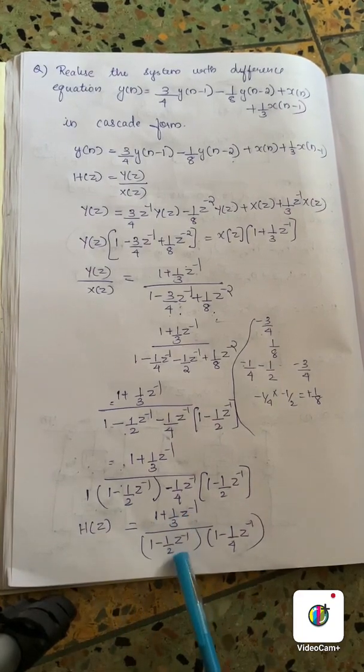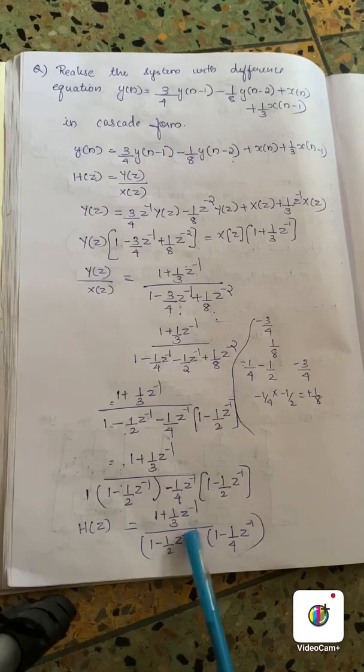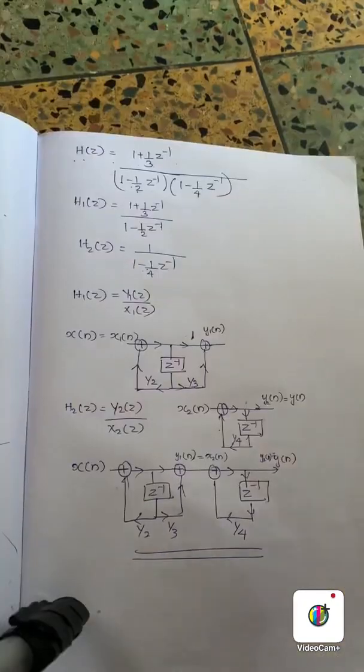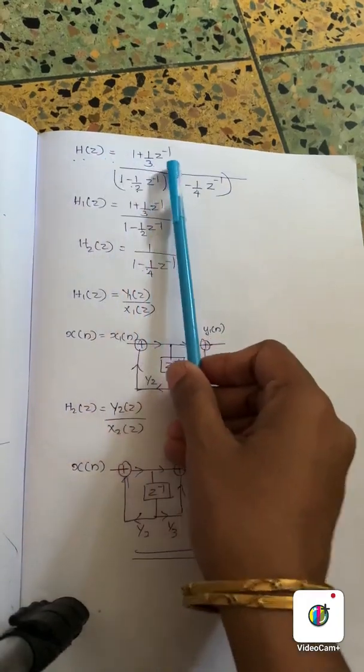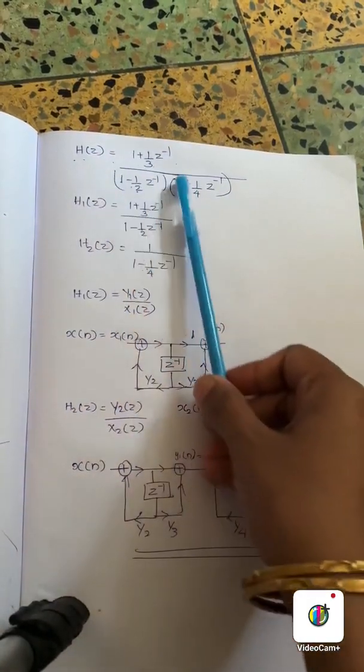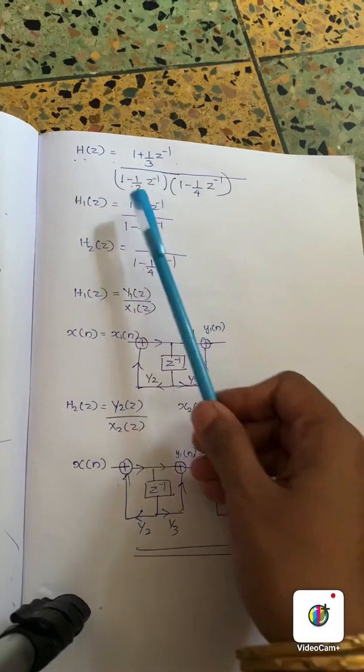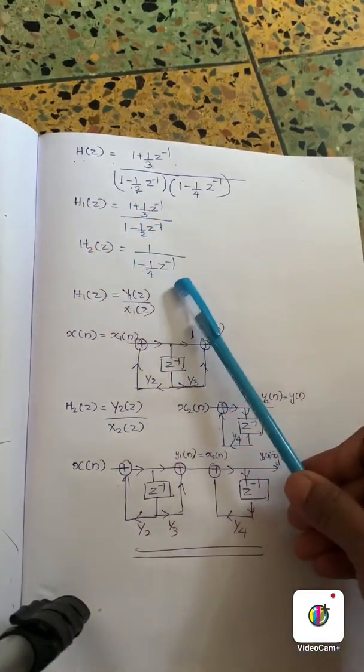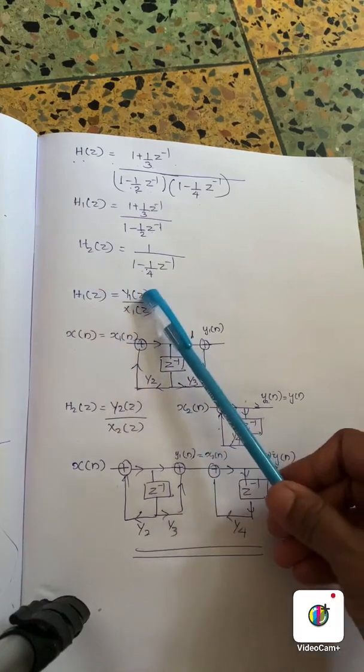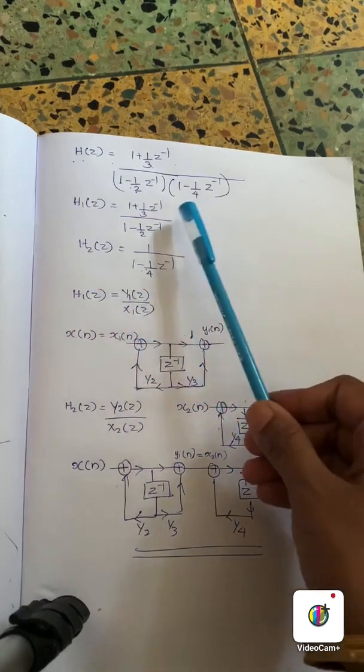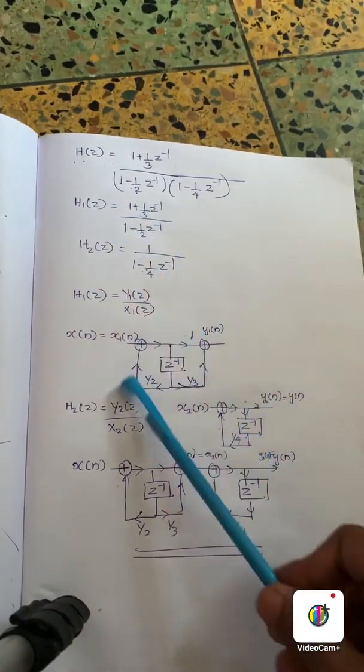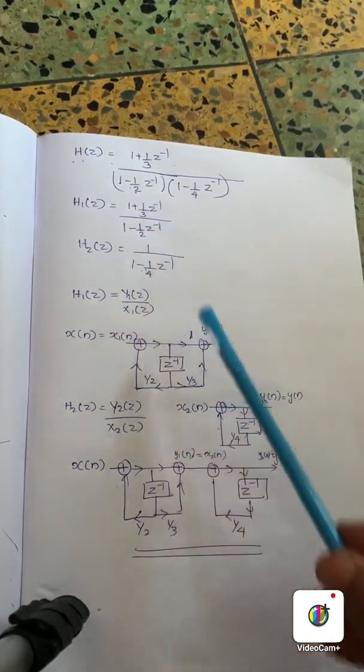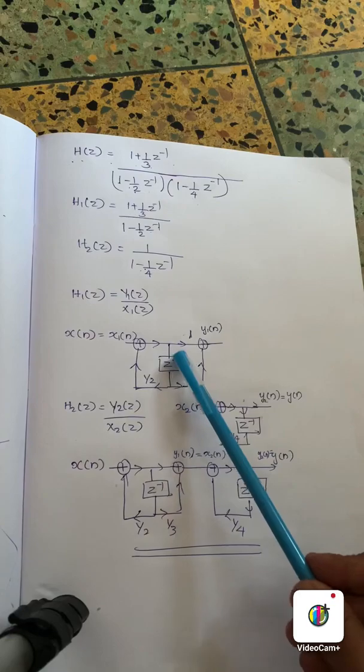There are two functions. This is my H1 and H2. H1, and this is what it is. Y1 by X1. It is a direct formula. If you have any idea, we will get the z inverse. So I will get a delay.